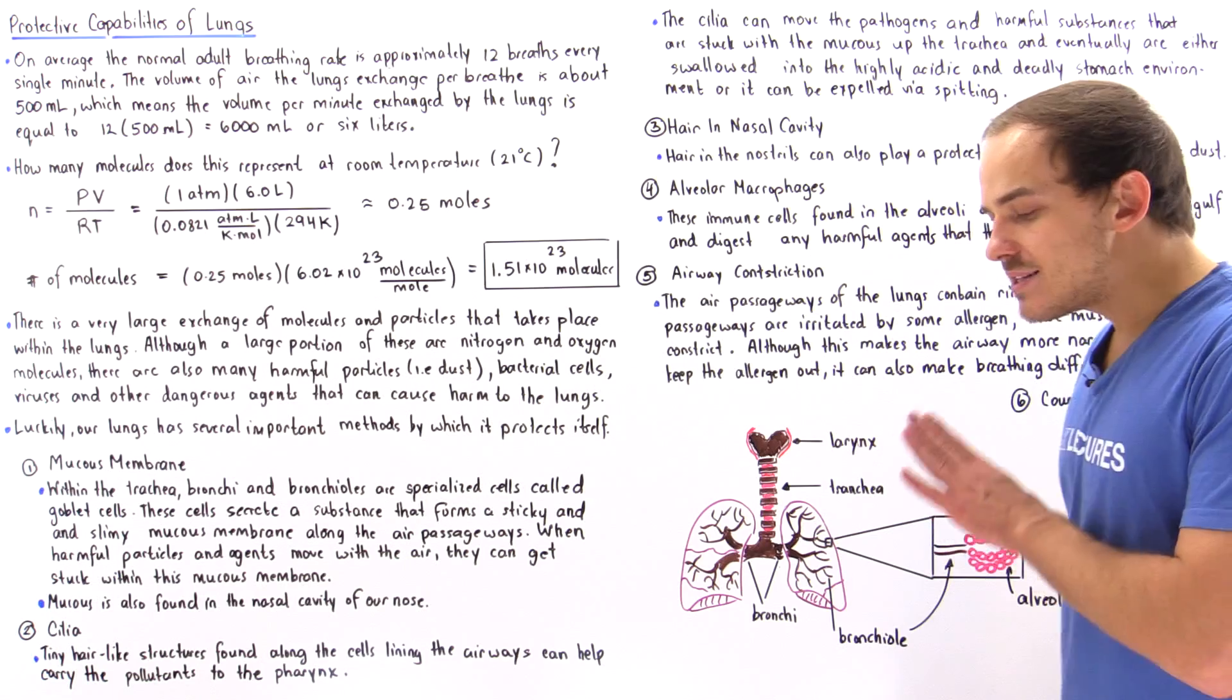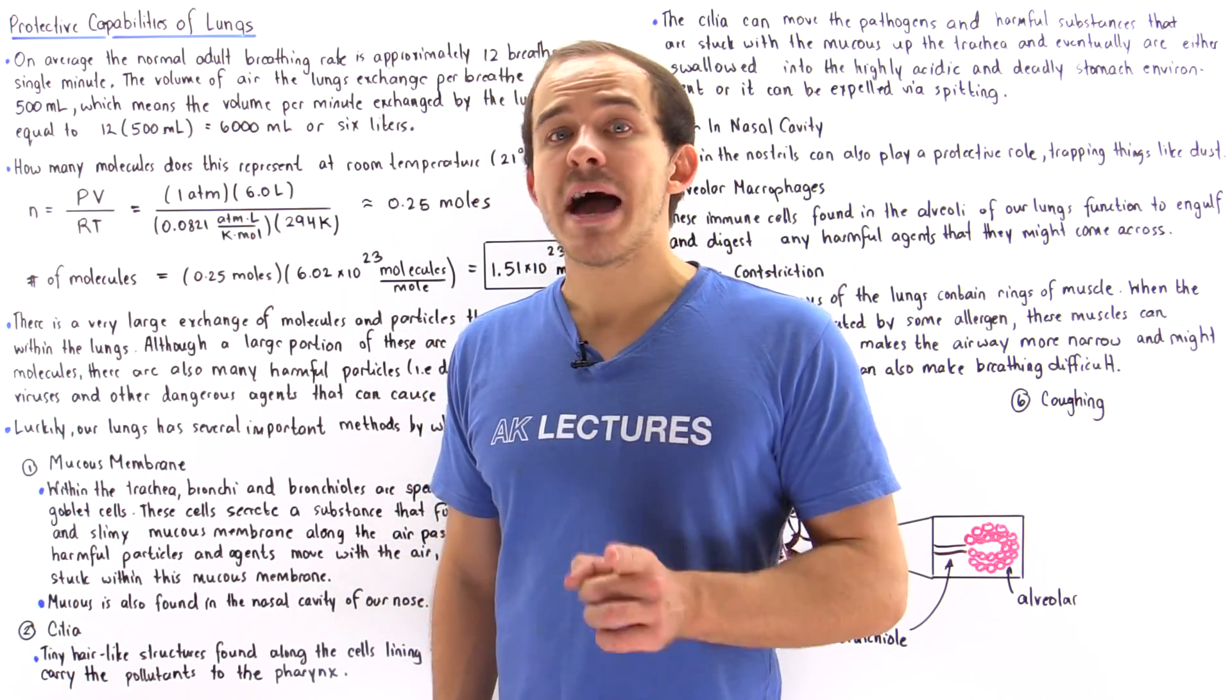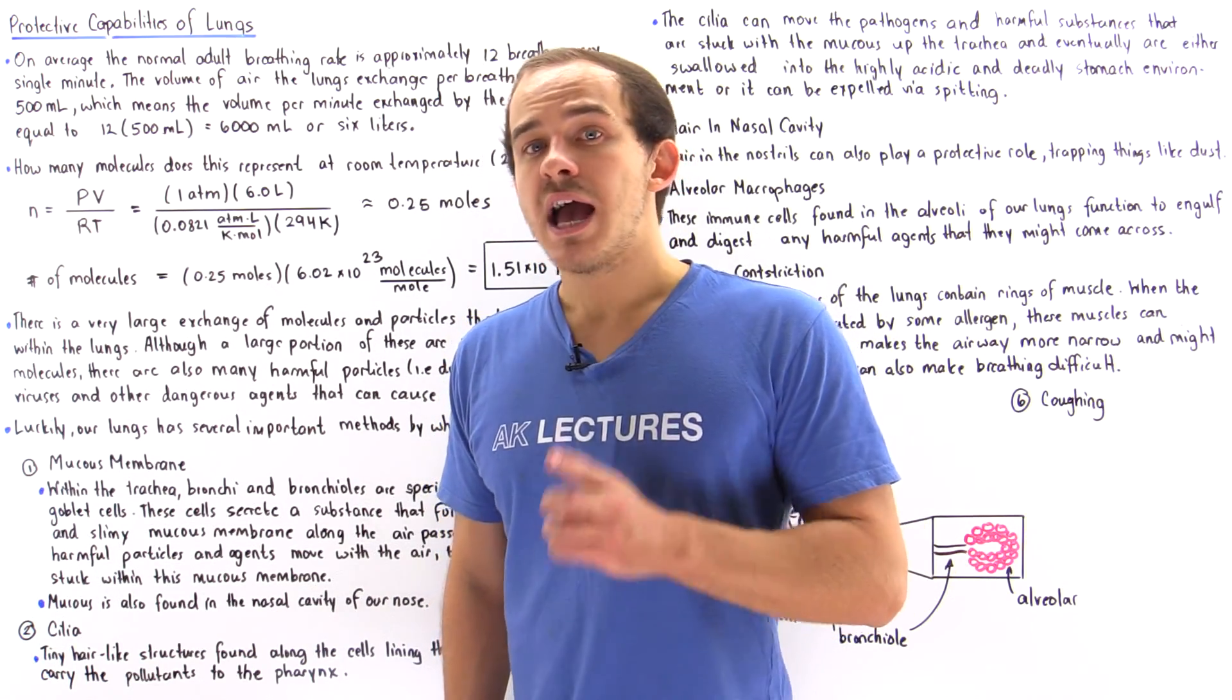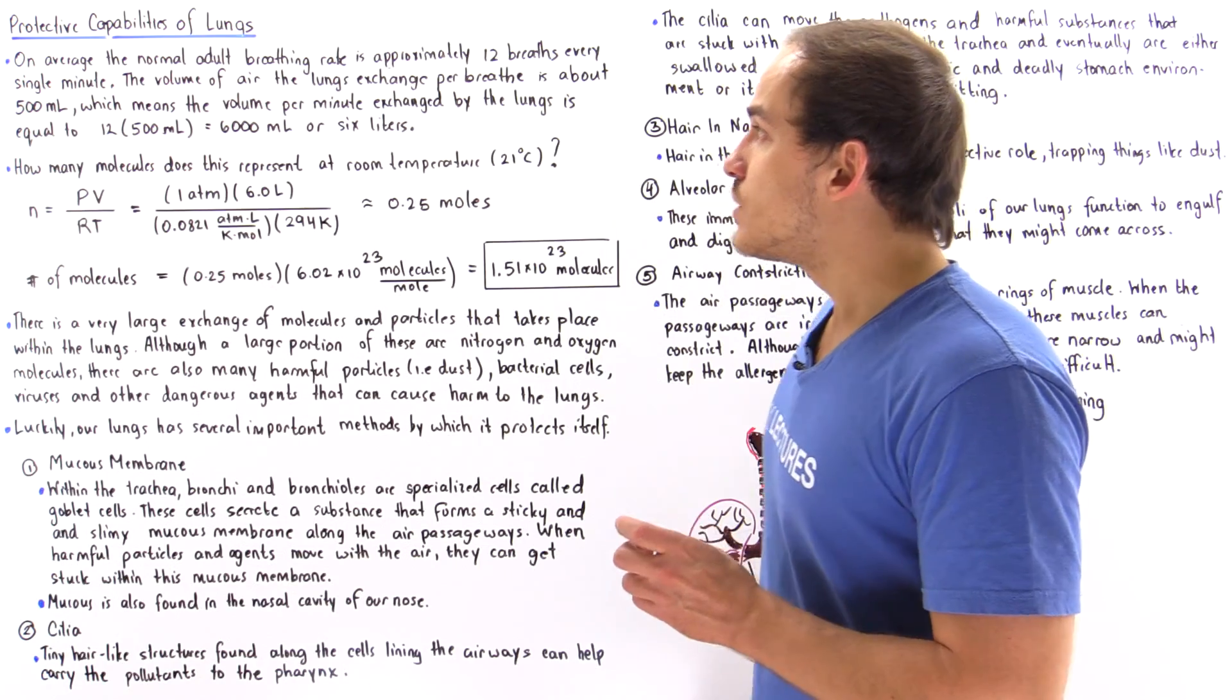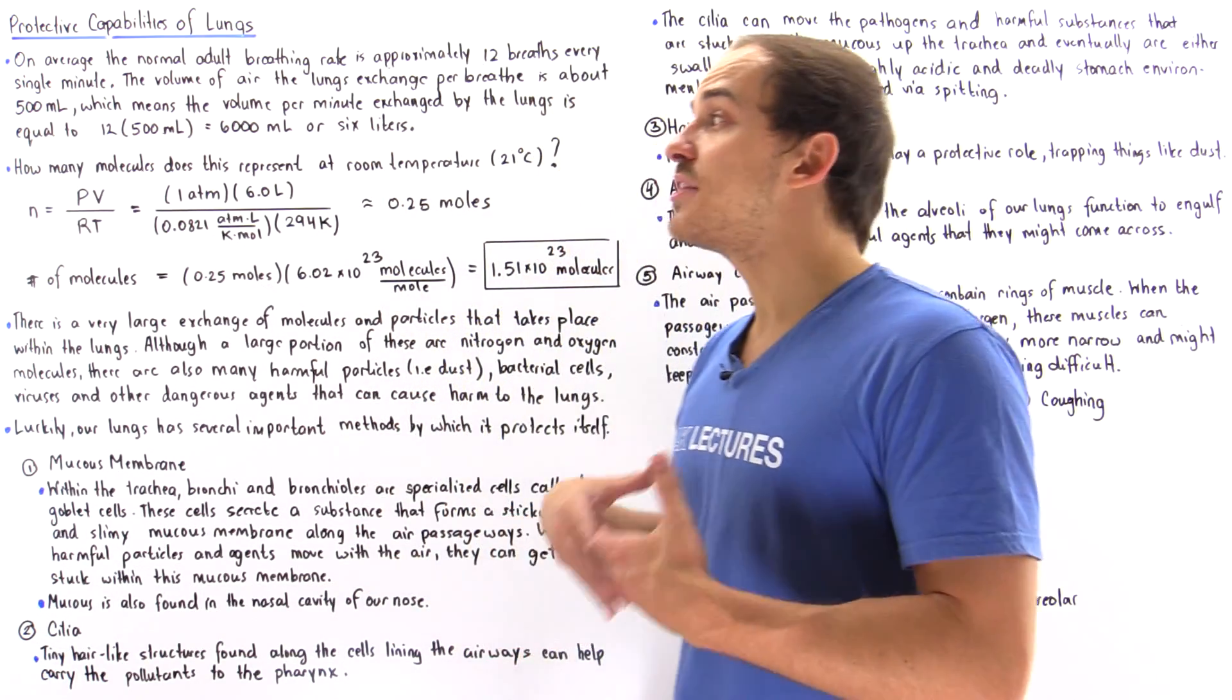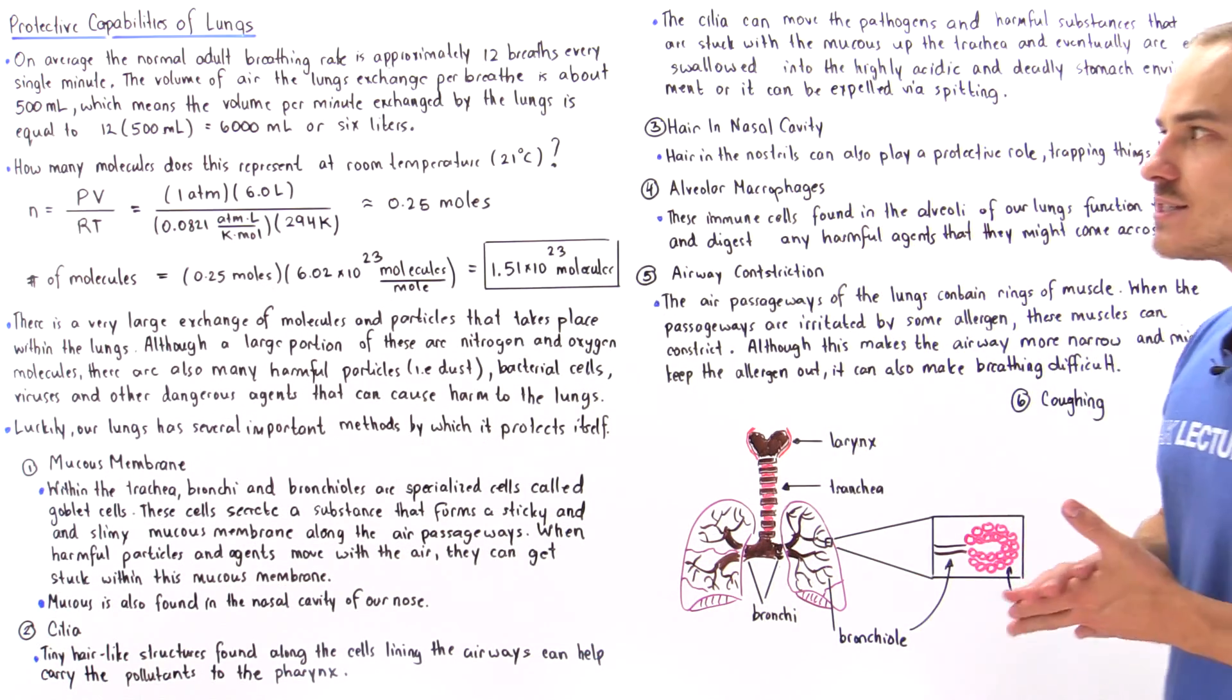For that same resting individual, the lungs are capable of exchanging about 500 milliliters of volume of air every single breath. This is known as the tidal volume, and we'll talk about what the tidal volume is and how it's measured in the next several lectures.